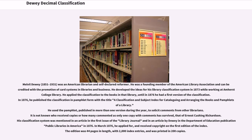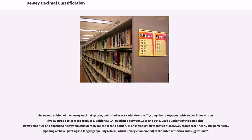In March 1876, he applied for and received copyright on the first edition of the Index. The edition was 44 pages in length, with 2,000 index entries, and was printed in 200 copies. The second edition of the Dewey Decimal System, published in 1885, comprised 314 pages with 10,000 index entries; 500 copies were produced. Editions 3 to 14, published between 1888 and 1942, used a variant of this same title. Dewey modified and expanded his system considerably for the second edition.